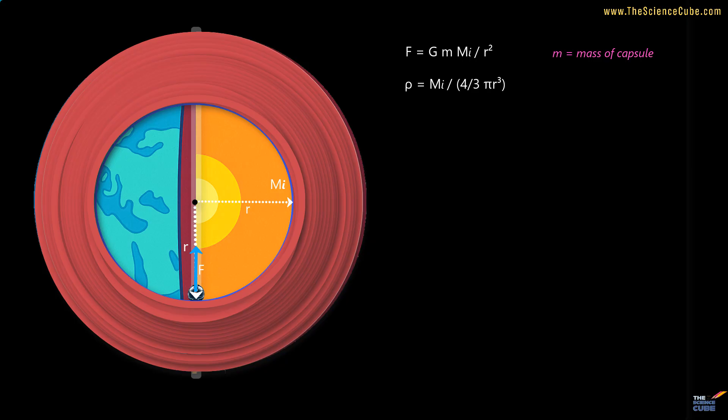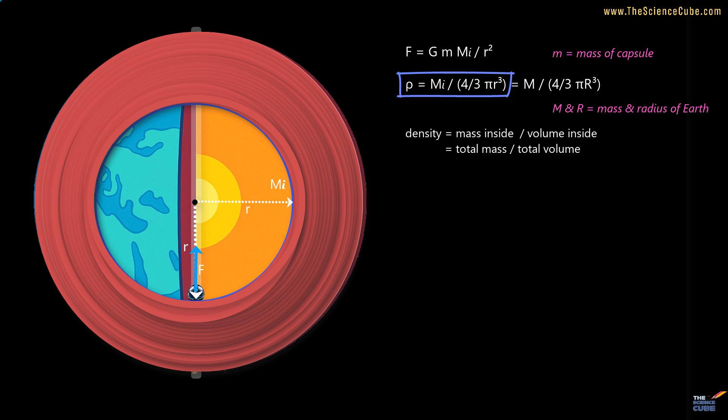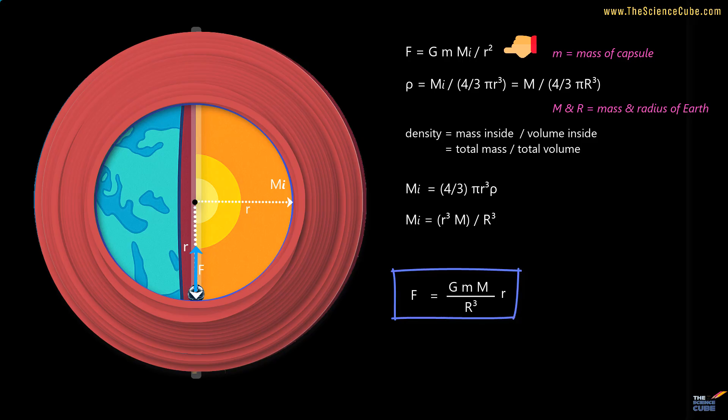You could also write density as total mass of the Earth divided by its total volume, and the two should be equal. Then, Mi expressed in terms of its radius R and density rho, using this equality, would be 4/3 π R³ ρ. If we put the value of rho, we get Mi equals R³M upon capital R³. If we substitute this expression for Mi into the equation, we get the gravitational force on the capsule as F equals GmM times R upon R³.